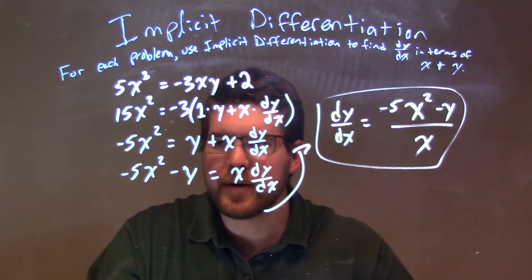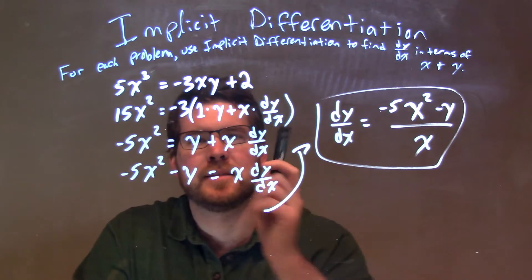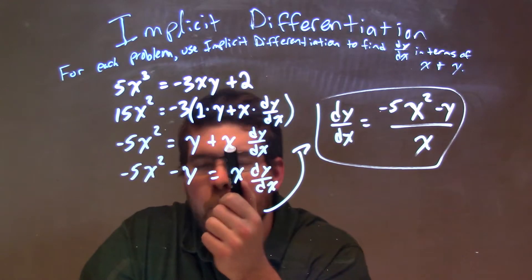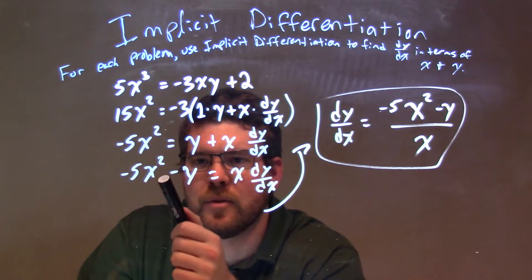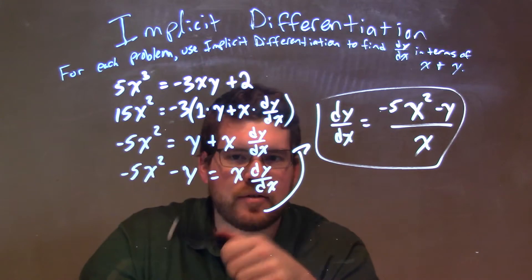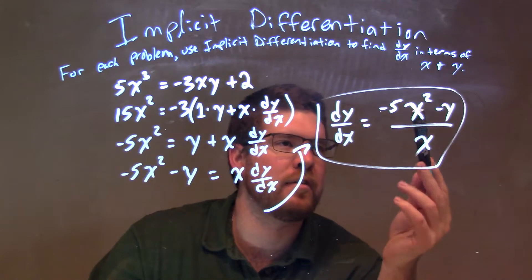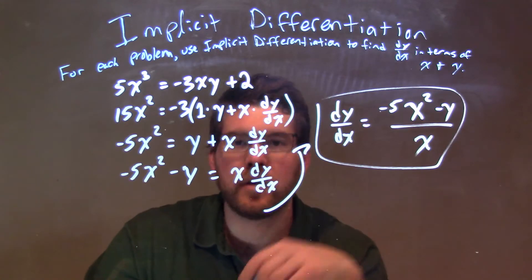Divide both sides by negative 3, giving me negative 5x squared on the left-hand side, and then I simplify it even more. I subtract the y to both sides, so I put it over here, and then divided by x, leaving me our final answer of dy/dx is equal to negative 5x squared minus y over x.